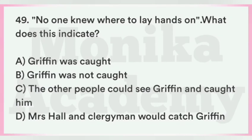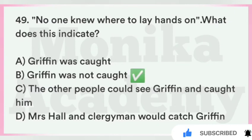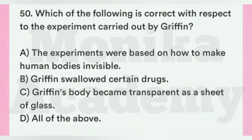Question 49: 'No one knew where to lay hands on' — what does this indicate? Option A: Griffin was caught. Option B: Griffin was not caught. Option C: Other people could see Griffin and caught him. Option D: Mrs. Hall and clergyman would catch Griffin. The correct answer is B, Griffin was not caught — किसी को भी नहीं पता था कहाँ पकड़ें और किसे पकड़ें, यानी Griffin किसी की पकड़ में नहीं आया था.